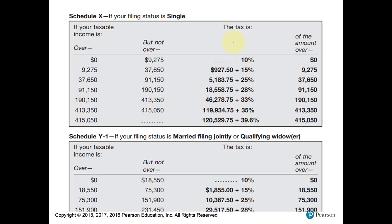The reason income shifting is sometimes beneficial — and this is a planning technique mentioned at the end of chapters — is the graduated tax rate. Looking at the single filing status schedule: the first ~$9,000 of taxable income is taxed at 10%, then up to ~$37,650 at 15%, all the way up to the highest bracket near 40%. If you're in that high bracket and shift income to your kids who pay only 10%, the savings can be close to 30% — while keeping the money in the family.